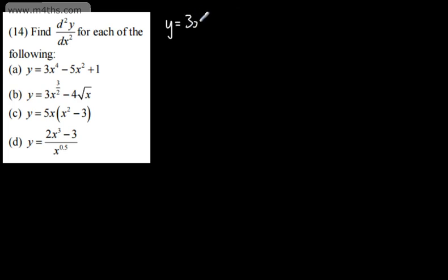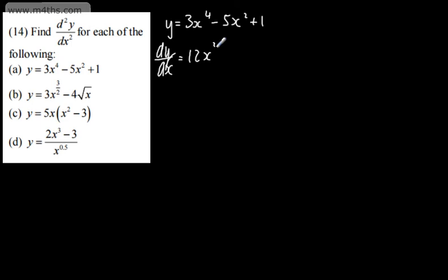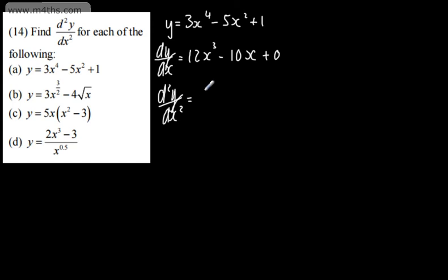Let's start with example A. We have y = 3x⁴ - 5x² + 1. We need an expression for dy/dx first. Multiplying down by the power and dropping the power, we get 12x³ - 10x. When we differentiate a constant it gives us 0, so we omit that. Then the second derivative, d²y/dx², gives us 36x² - 10.